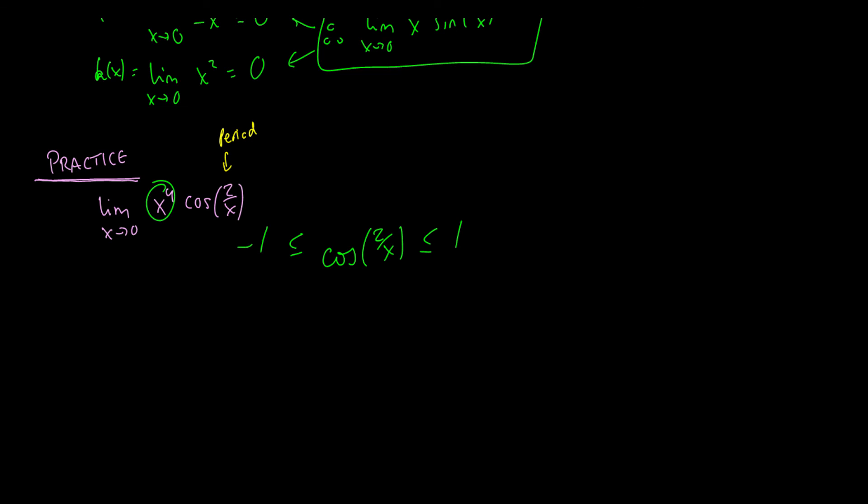Okay, so now let's multiply by x to the fourth on both sides. We get negative x to the fourth is less than or equal to x fourth times cosine of two over x, which is less than or equal to x to the fourth. And we're going to take limits. I'm not going to write them up formally, but if we take the limits as x goes to zero, then we're going to get zero is less than x to the fourth cos of two over x is less than zero. And because the lower bound and upper bound are zero, therefore we know that the limit as x goes to zero of x to the fourth times cosine over two to the x is equal to zero.